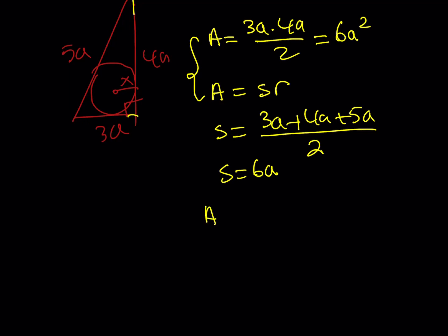Radius is what I'm trying to find, and I got two expressions for the area. Let's go ahead and set them equal to each other. So, we get from here, area is equal to 6A squared, which is equal to S times R. Beautiful. So, what does that mean? It means that R is equal to A. Beautiful. Wow. That's amazing, isn't it?